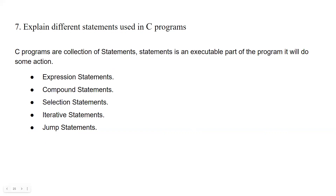Seventh question: Explain different statements used in C programming. C programming is a collection of statements. A statement is an executable part of the program — it will do some actions. In general, all arithmetic and logical actions fall under statement categories. We have five types of statements: expression statements, compound statements, selection statements, iterative statements, and jump statements.